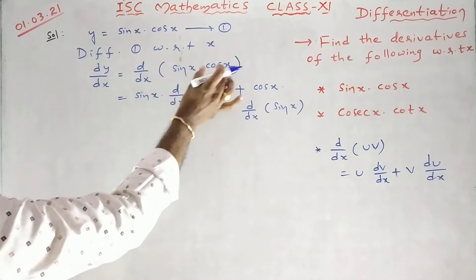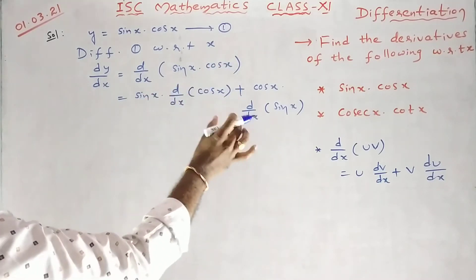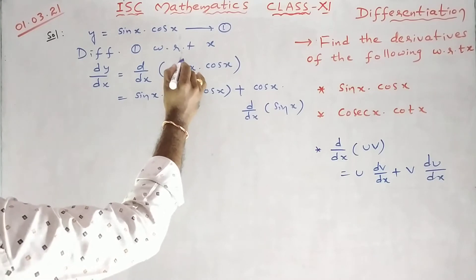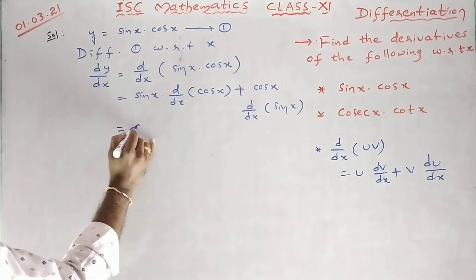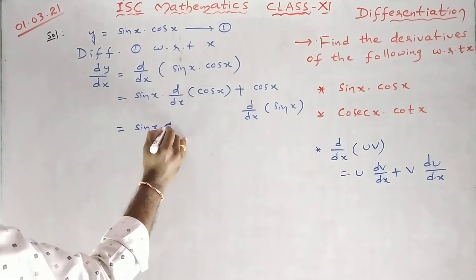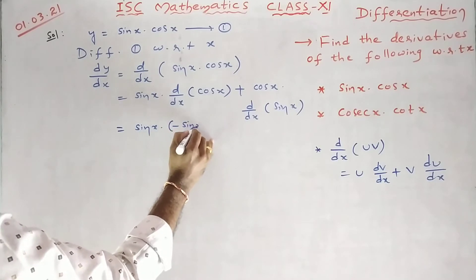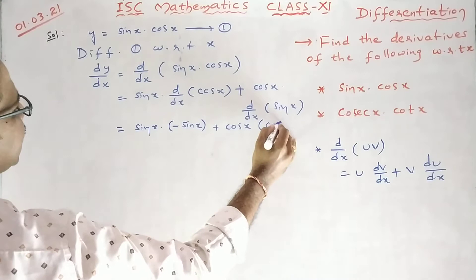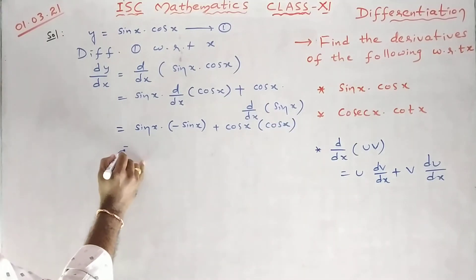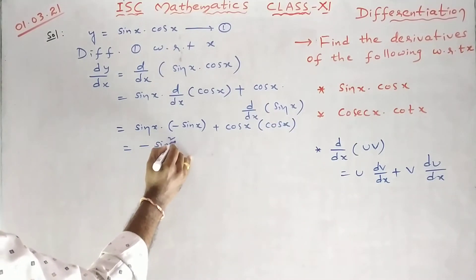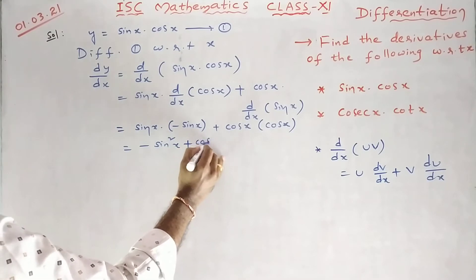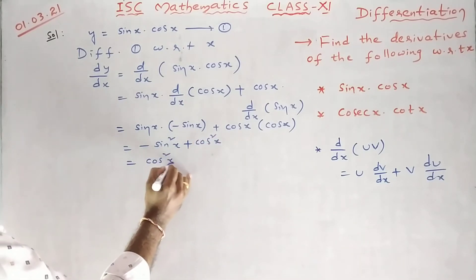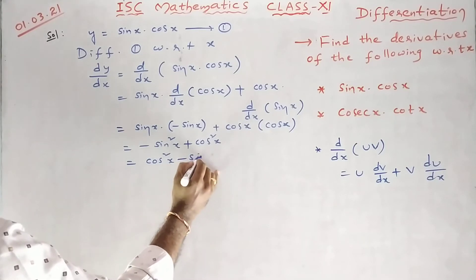First function into derivative of second function, plus second function into derivative of first function. This is u, this is v. Now, sin x into derivative of cos x is minus sin x, plus cos x into derivative of sin x is cos x. So, minus sin squared x plus cos squared x. So we can write cos squared x minus sin squared x.